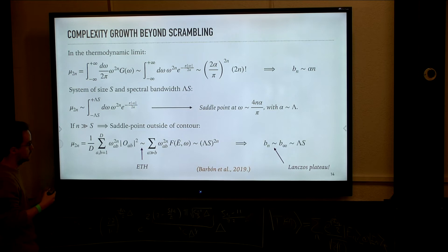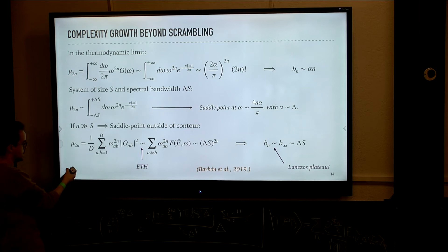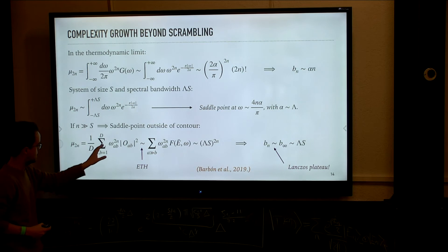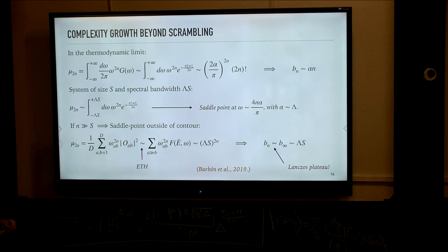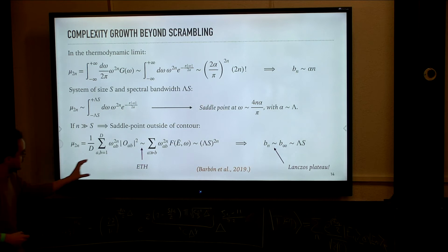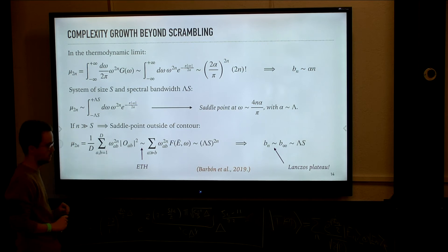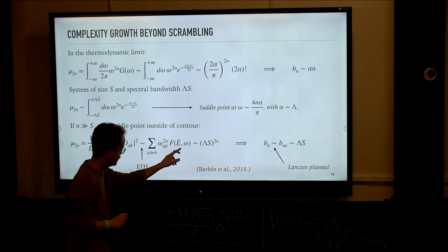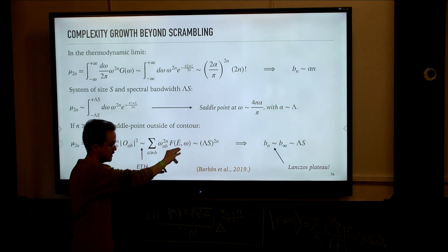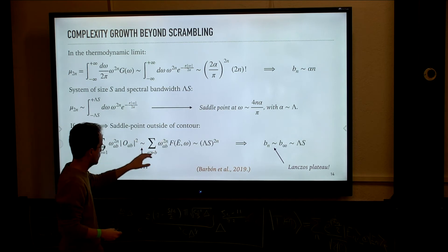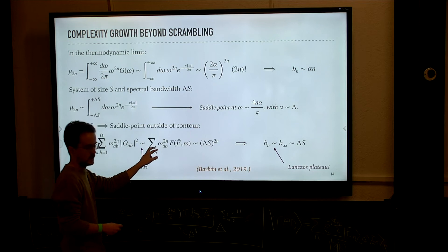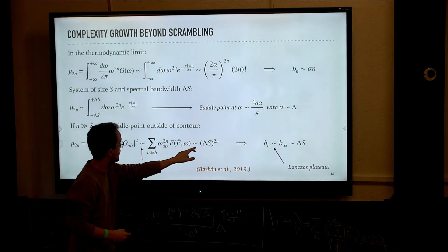In that case, we are starting to probe discreteness of the spectrum and need to use the morally correct expression of the moments: a discrete sum of the matrix elements of the operator in the energy basis weighted by frequencies. Using the ETH estimate, the off-diagonal matrix elements — the only ones that contribute because of the energy difference factors — are given up to some prefactor by a smooth function of the energy. Considering that this function is sufficiently smooth, the sum basically scales like the maximum energy differences in the spectrum. So this moment scales like (λS) to the power 2n.